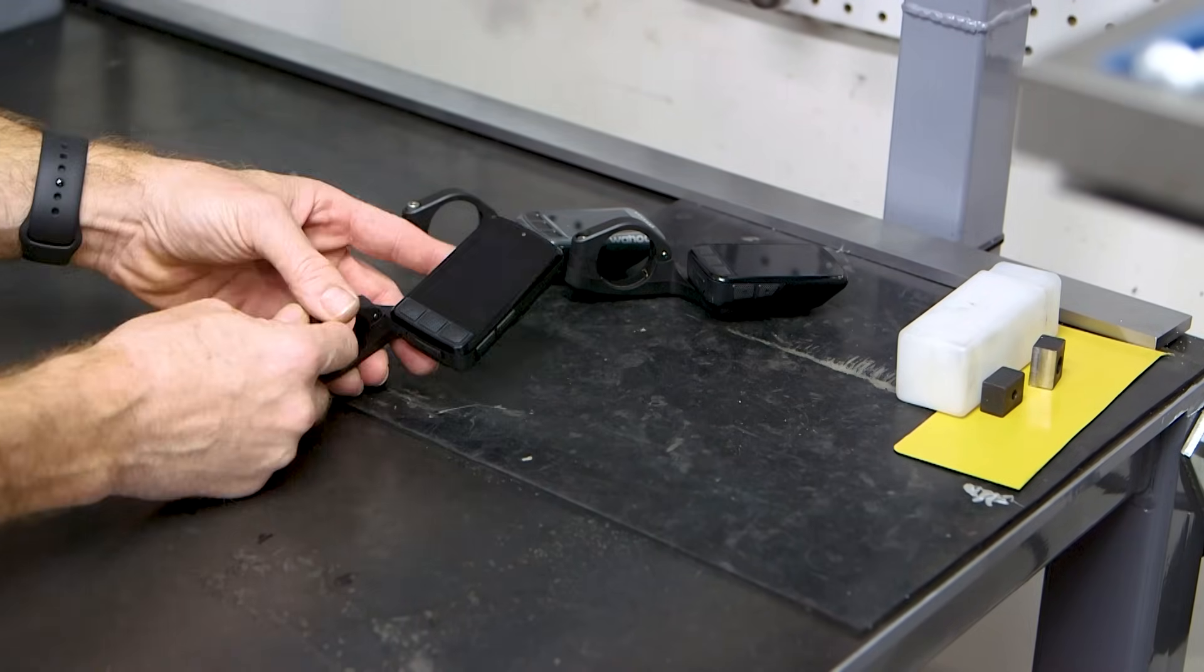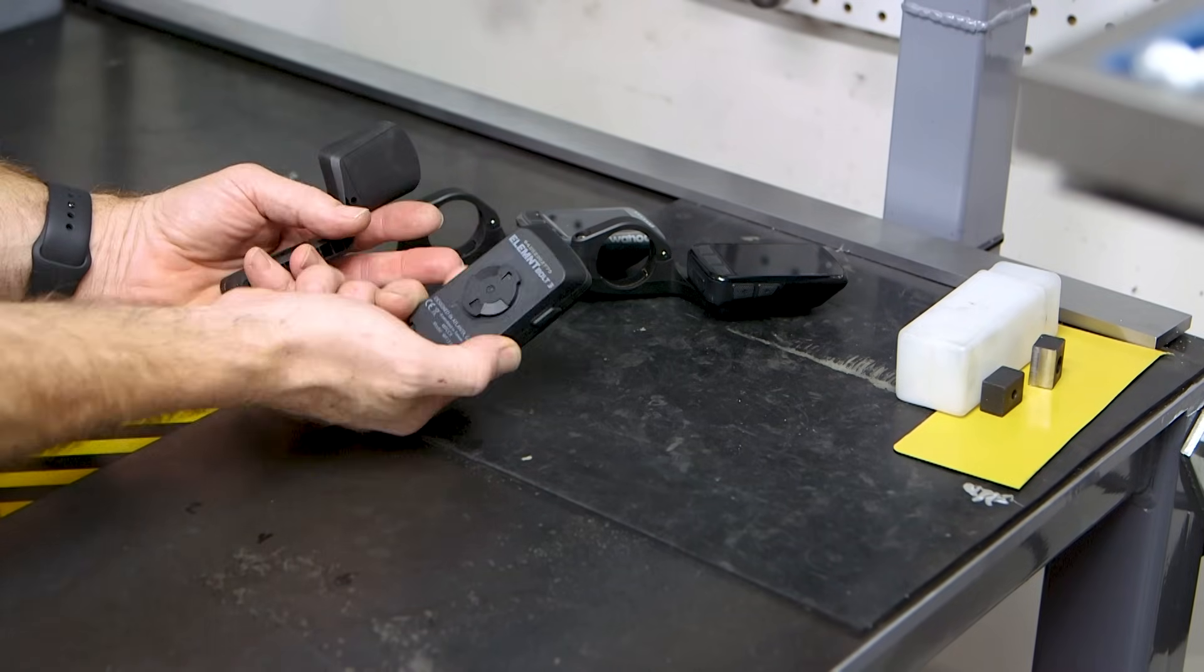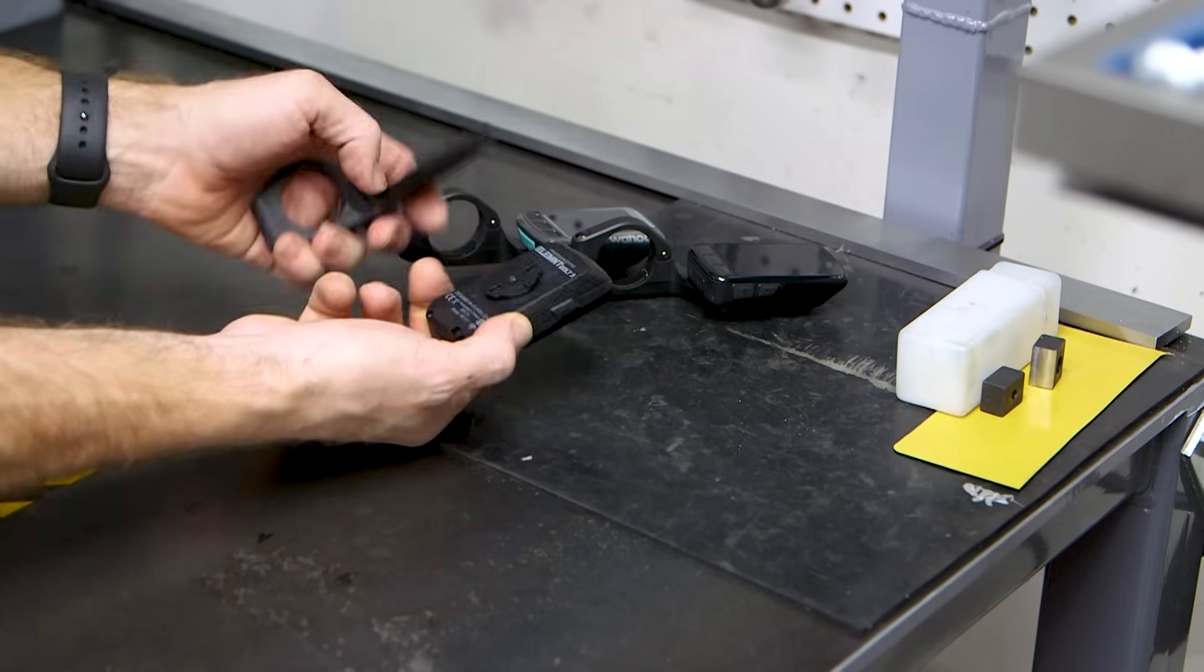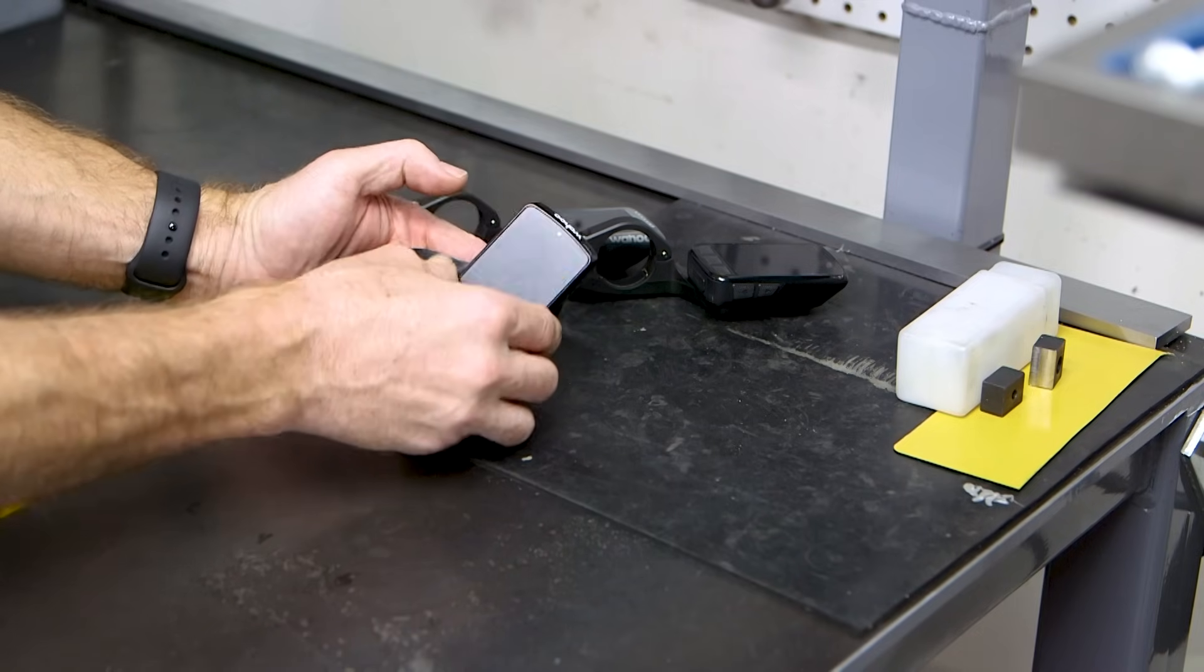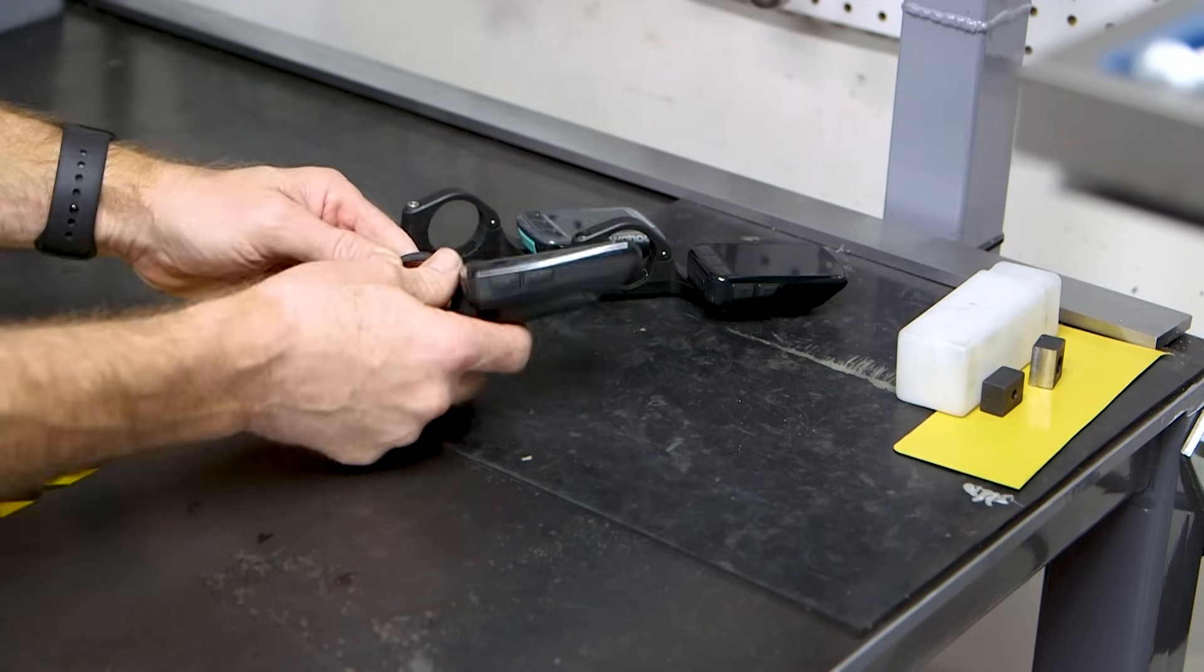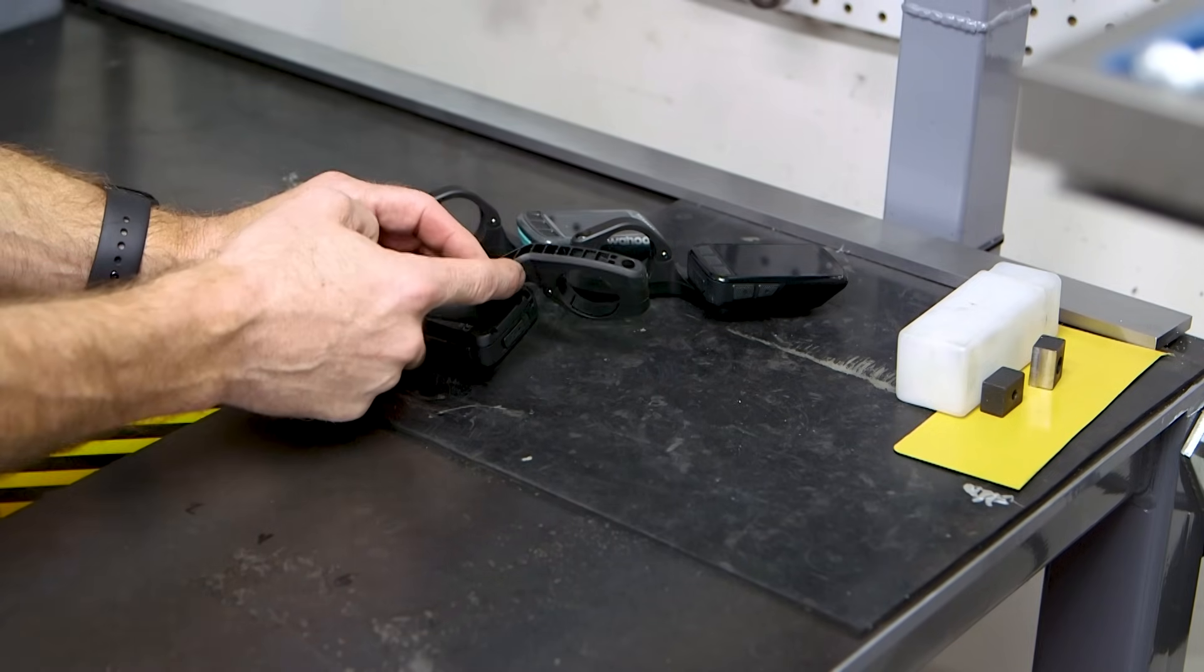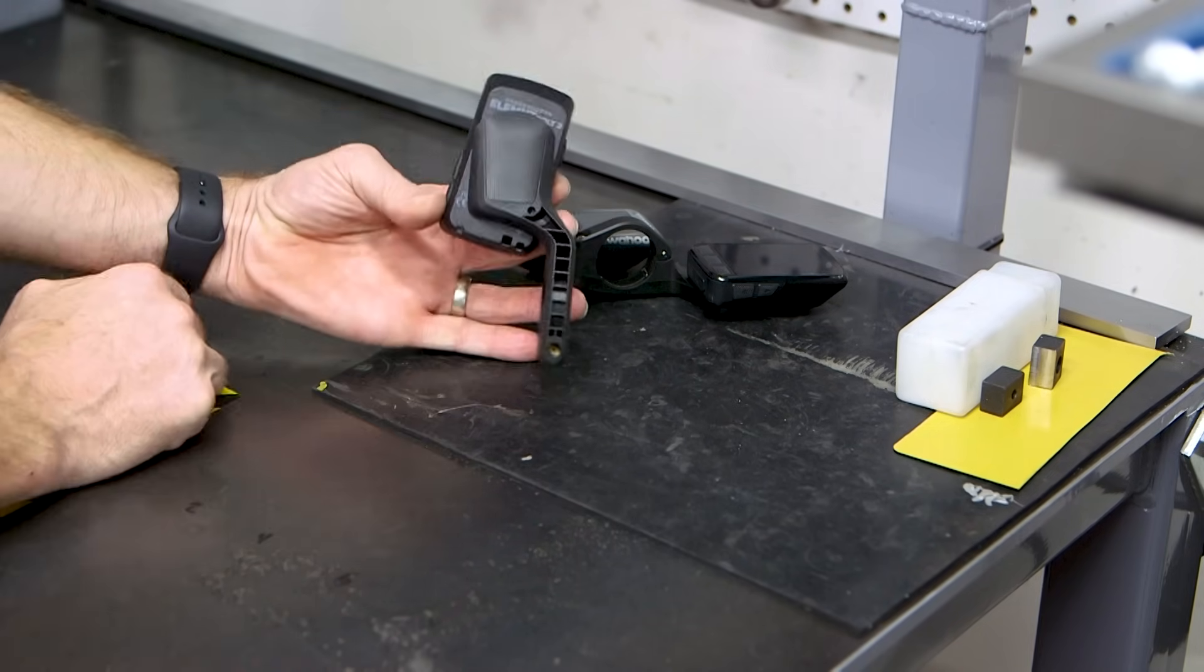So when that one died, when I broke the screen on it, I got this one. And this is the current generation, the Bolt 3. It's got the same mount. I figured it would work just like the other two. And when you put it on, it looks like it's going to work. But what happens is it's just a bit larger and it hits the side of the mount. So you can only get it on that far.